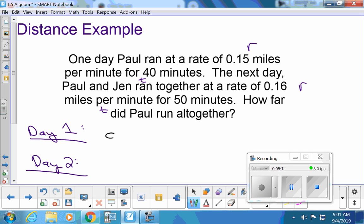All right, so day one. Distance equals rate times time. Our rate is 0.15. Our time is 40 minutes. 0.15 miles per minute for 40 minutes. You multiply those numbers together. And so the first day he went 6 miles.